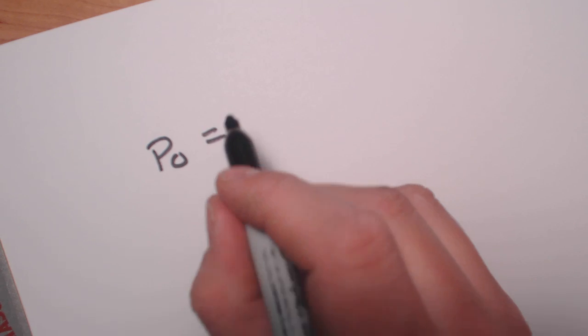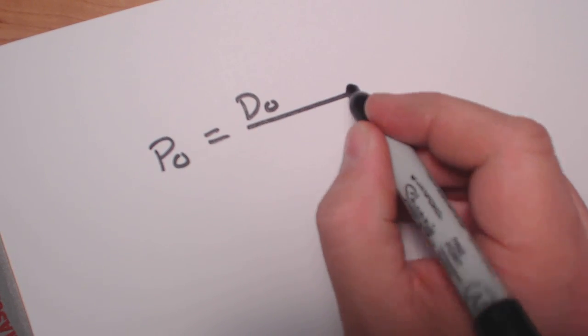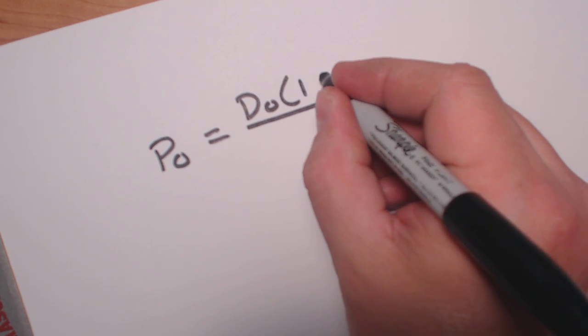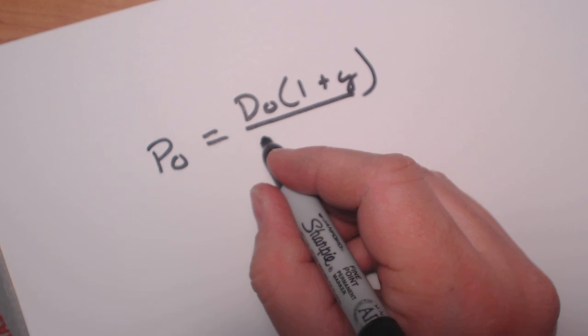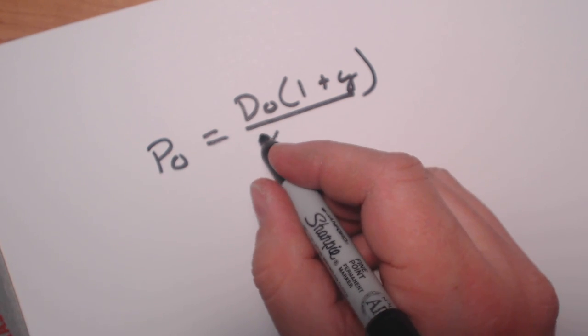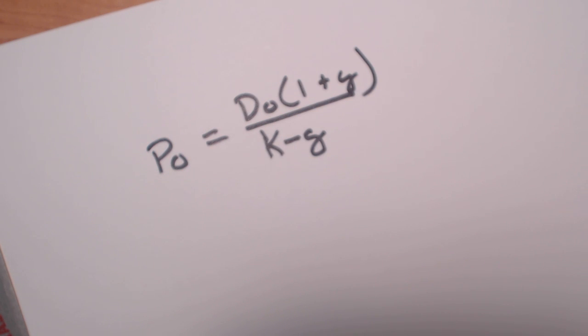We're going to start off and look at the equation. The equation starts with P0, which is the purchase price - that's what we're searching for. It equals D0 times 1 plus g (small g, which is growth) over k (small k) minus g. That is the equation we're looking at.